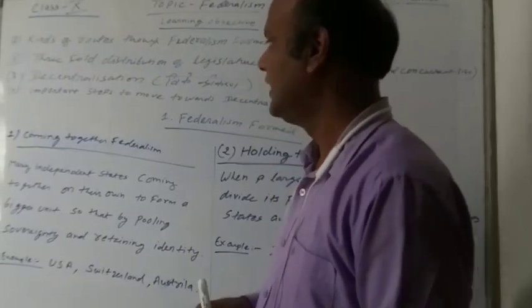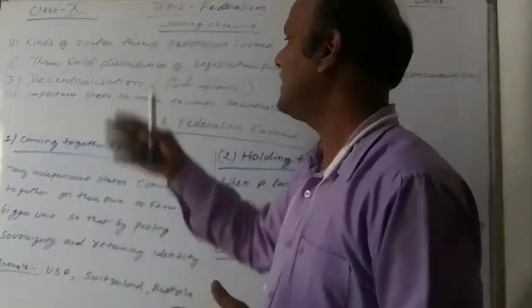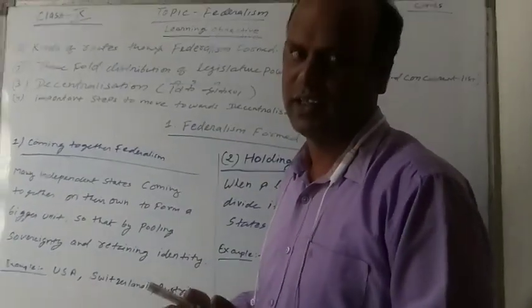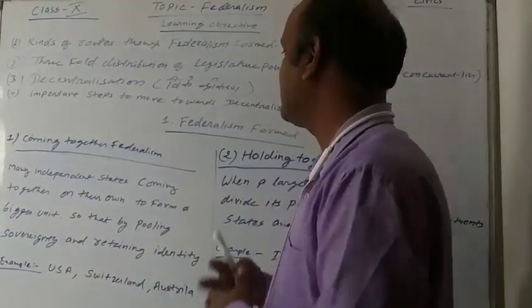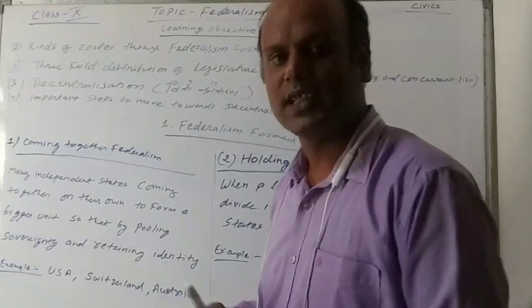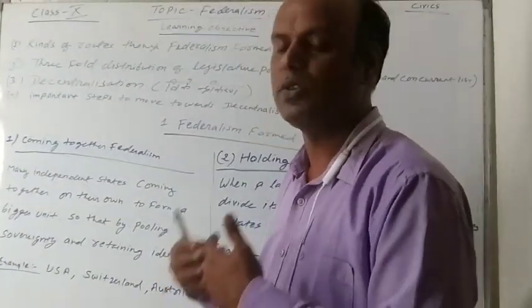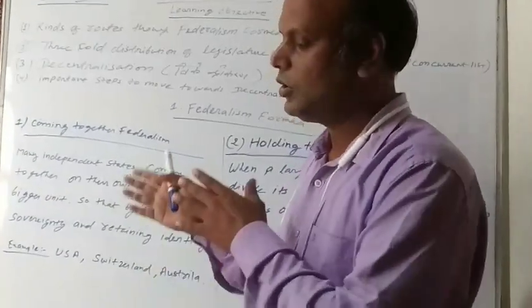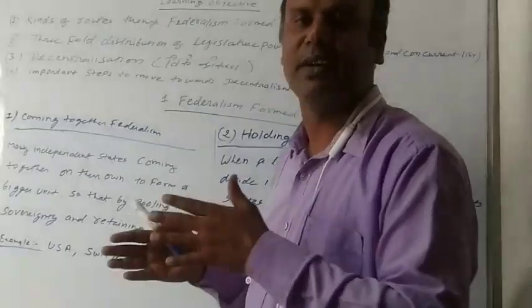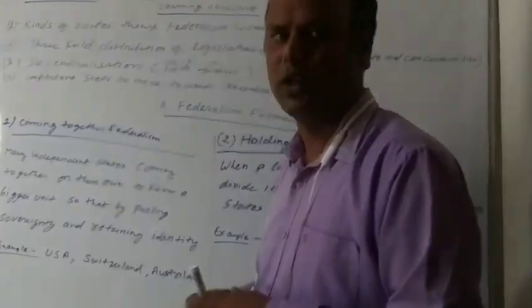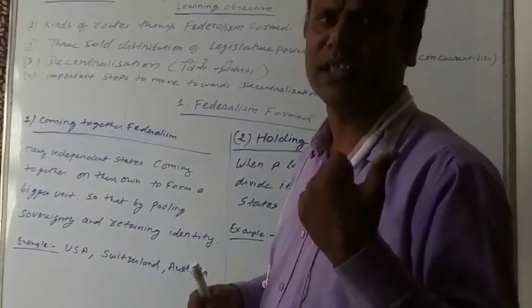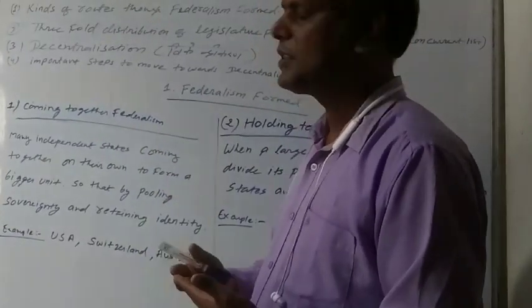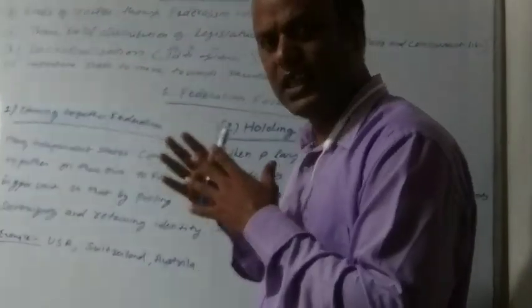Why decentralization? How did India take important steps towards decentralization? These steps came into our constitution after 1992. After 1992, the Panchayati Raj system started — the local government started. Local government is divided into two parts: one in urban areas and another in rural areas. The rural area has the Panchayati Raj system, and the urban area has municipalities. These are some important major steps towards the decentralization of power.